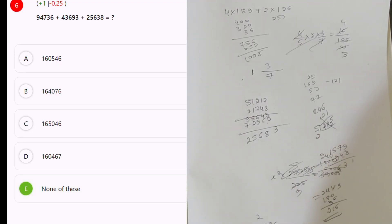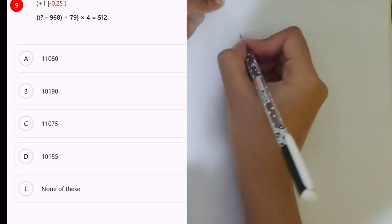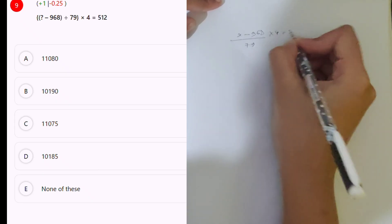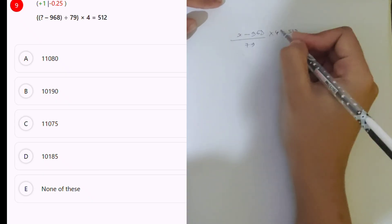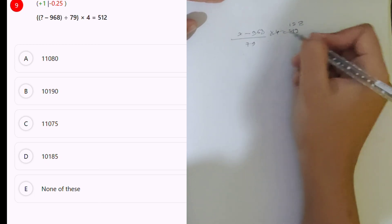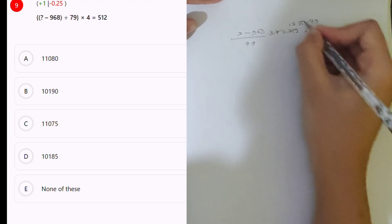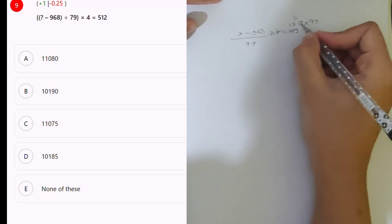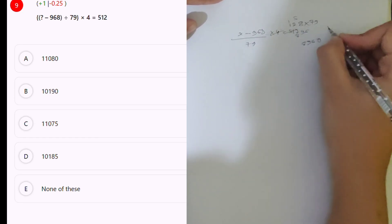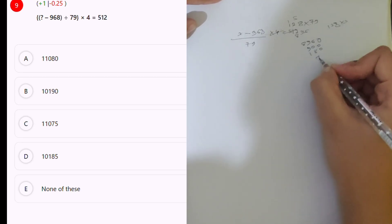Next: x minus x minus 9. 68 divided by 79 into 4, which is equal to 5. 12, 4, 4 ones are, and 4 2s are 8 and 4, 8. Okay: 79, 968 minus 968. 56, 5 and 7, 2s are 14. 19, 1, 7, 8, 8, 9, 6, 0, which is 128 into 9: 900 and 180 and 72.